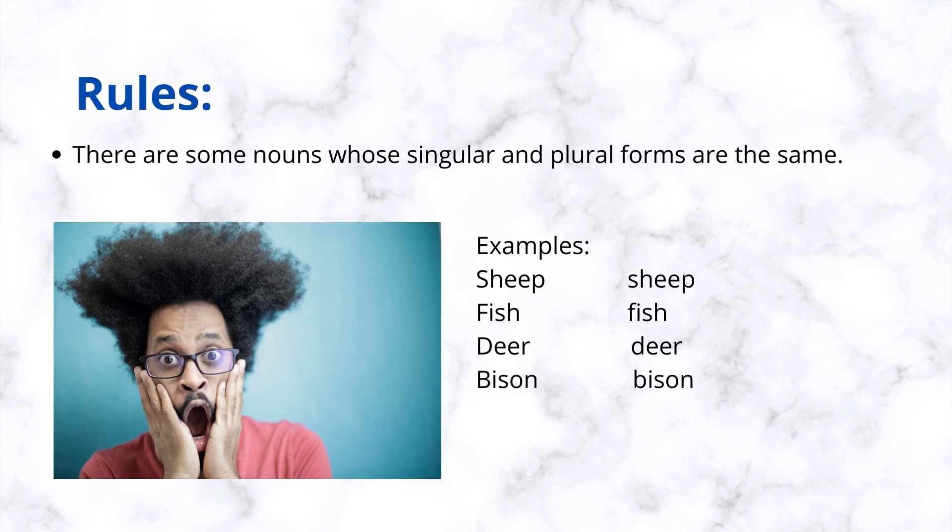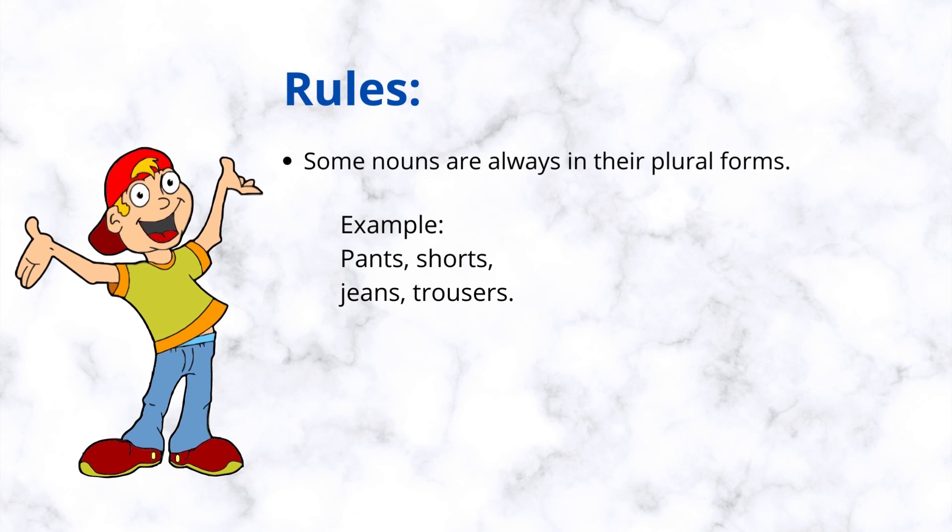There are some nouns whose singular and plural forms are the same. The last rule: some nouns are always in their plural forms. Example: pants, shorts, jeans, trousers.